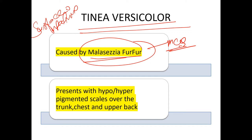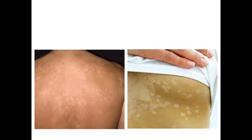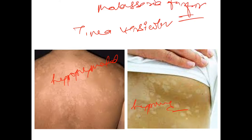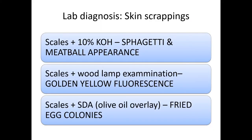Tinea versicolor presents with hypo- or hyperpigmented scales over the trunk, chest, and upper back. Looking at the pictures — this is hypopigmented, shown on the chest and back. This is tinea versicolor, caused by Malassezia furfur.